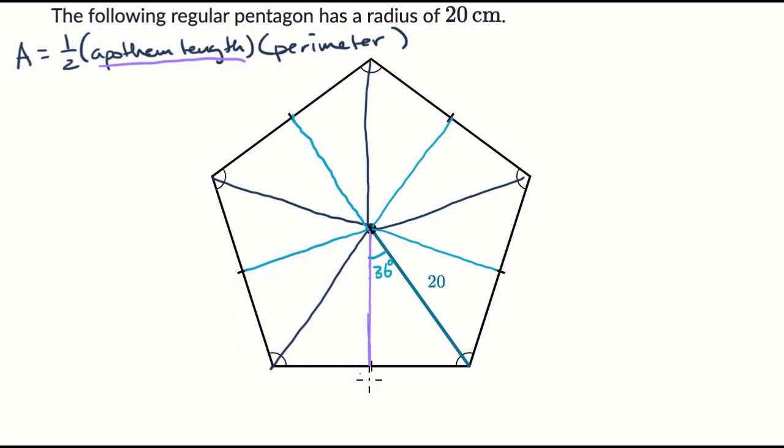Now why is that useful? Well, we're trying to figure out, let's just call this x. I don't want to use a because that'll get confused with area. We're trying to figure out the apothem length, but that's adjacent to this angle. We also know the hypotenuse. So which trig identity involves adjacent and hypotenuse? Well, cosine does.